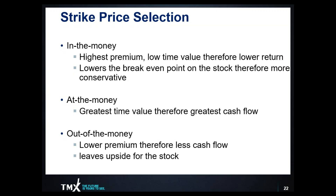Many investors create what we call sleeves in their portfolio. One sleeve may be built for capital appreciation — buying stocks expecting them to go higher without limiting upside. Another component may be dedicated to generating cash flow, where you've psychologically prepared yourself to potentially give up the stock but just generate cash flow. Out-of-the-money options give you lower premium but leave upside for the stock. Lower premium provides less cash flow, but it still provides cash flow while leaving upside — good for someone who wants to benefit from capital appreciation but still wants to generate a little income.